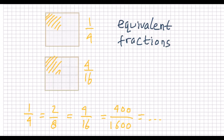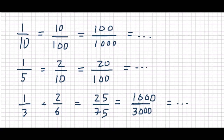Let's take a look at 1 over 4 and 4 over 16 — we see that they are equivalent because they describe the same amount. Two fractions having the same ratio are equivalent, hence a fraction may have infinitely many other fractions equivalent to it. For example, 1 over 4 is equivalent to 4 over 8, 4 over 16, 400 over 1600, and so on. 1 over 10 is equivalent to 10 over 100, 100 over 1000, and so on.